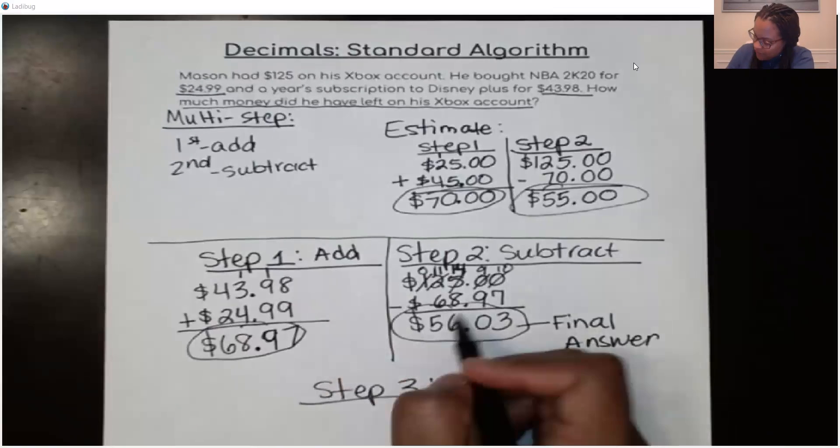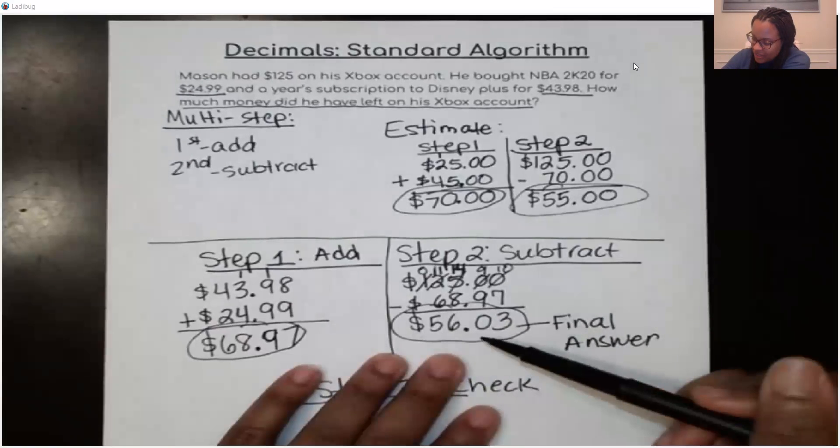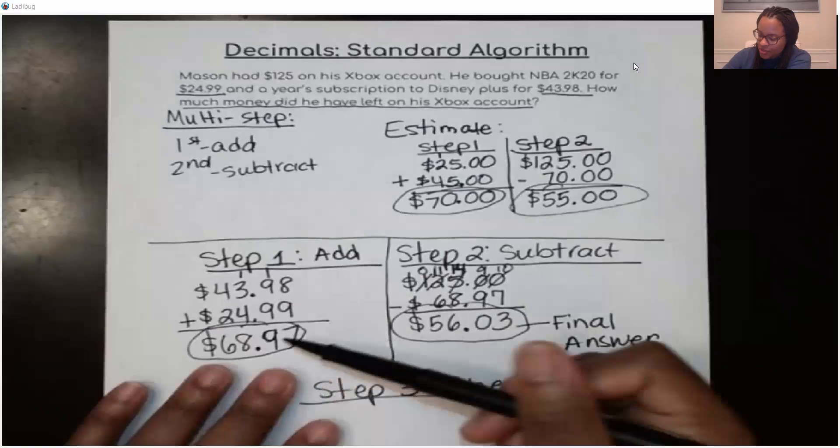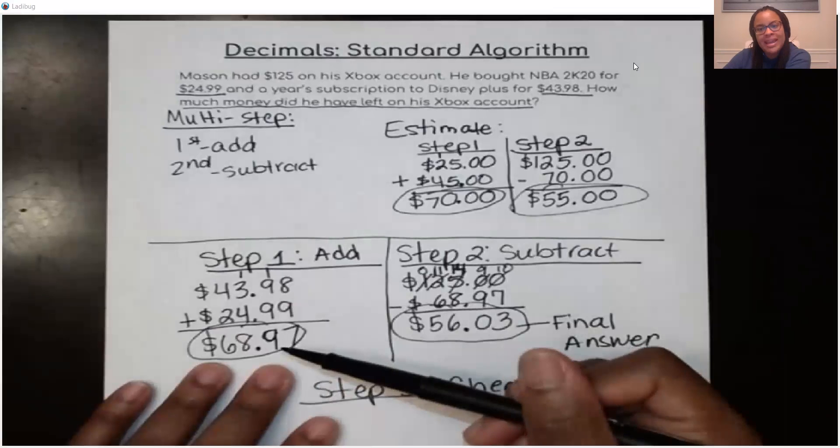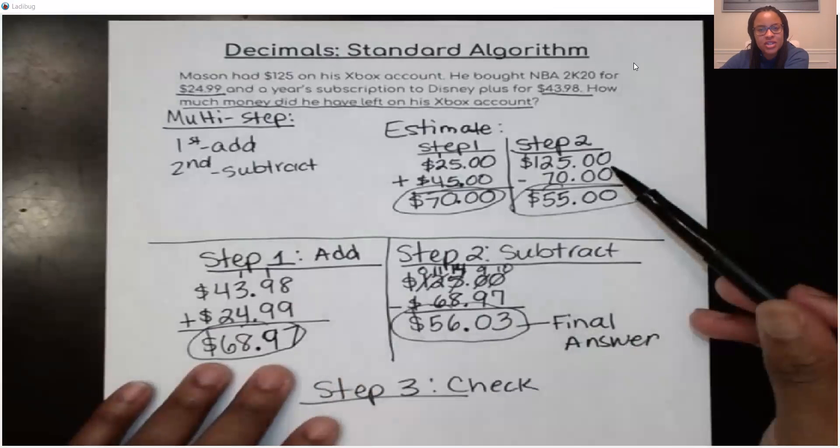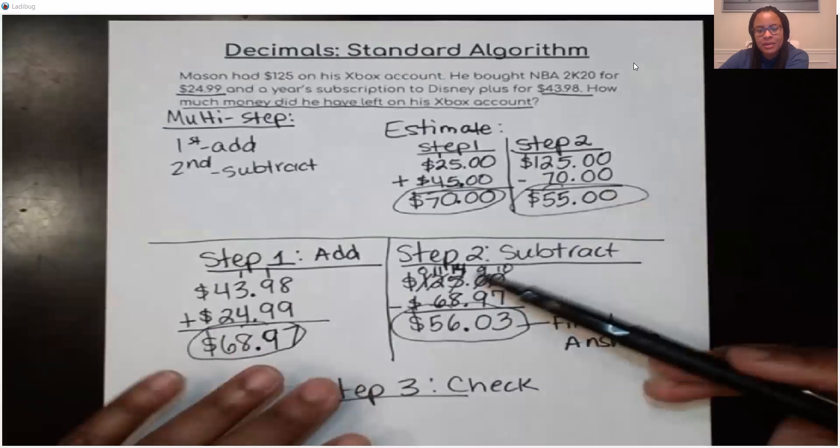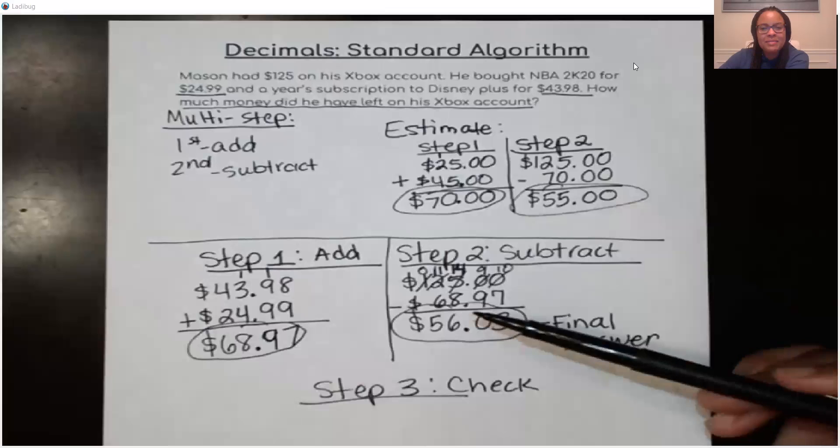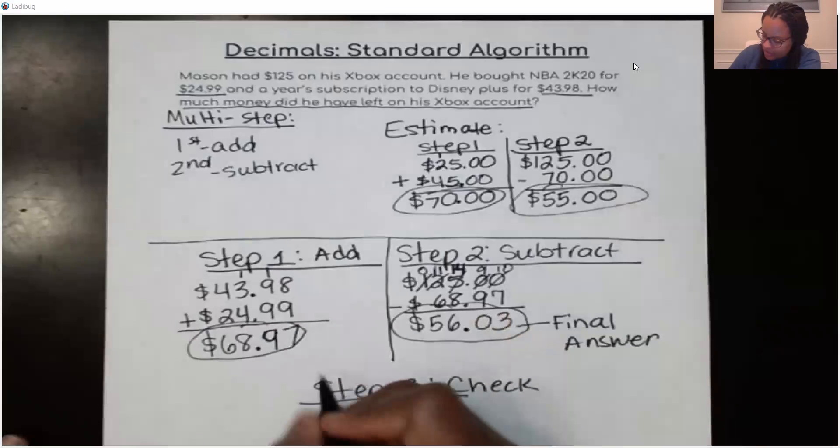So I'm going to actually add the $56.03 to the $68.97. And I should get what? Yeah. I should get what I started with, $125. If I don't end up getting $125 and I've done something wrong, maybe I know how to use the standard algorithm. But I made a simple error. I added incorrectly or subtracted incorrectly.